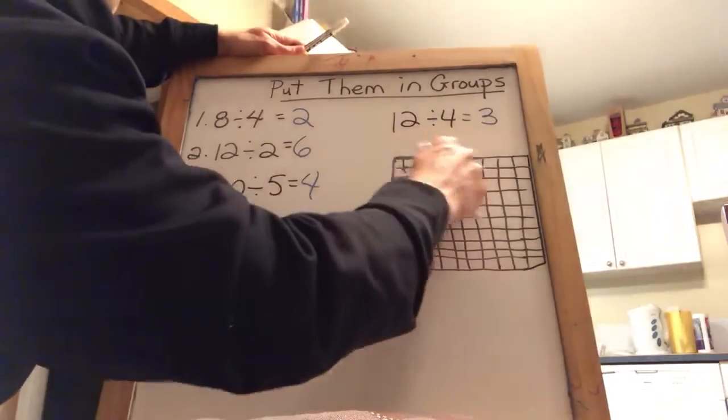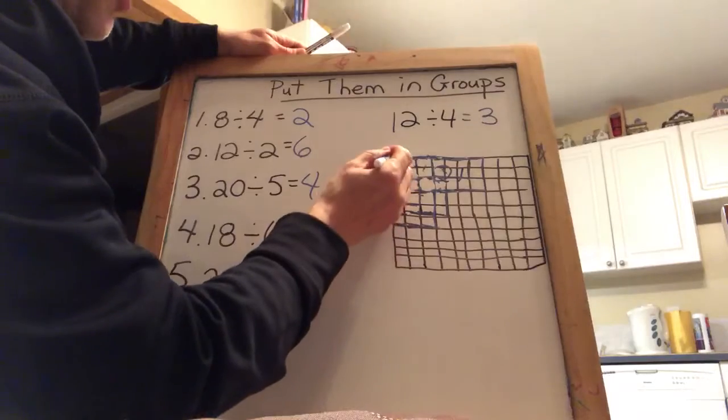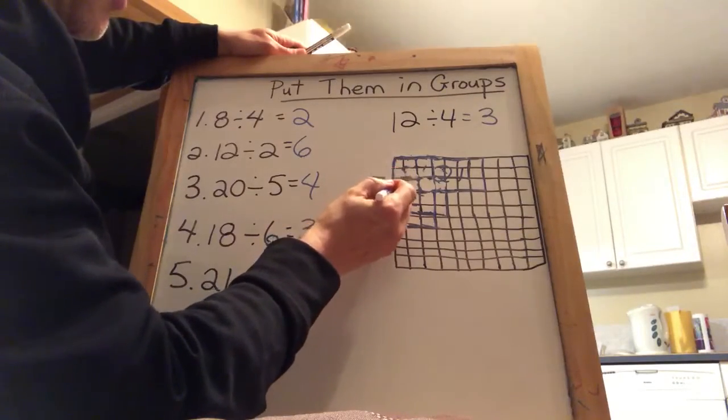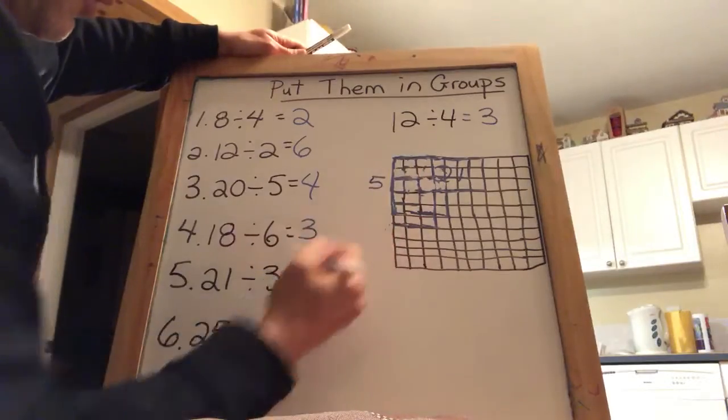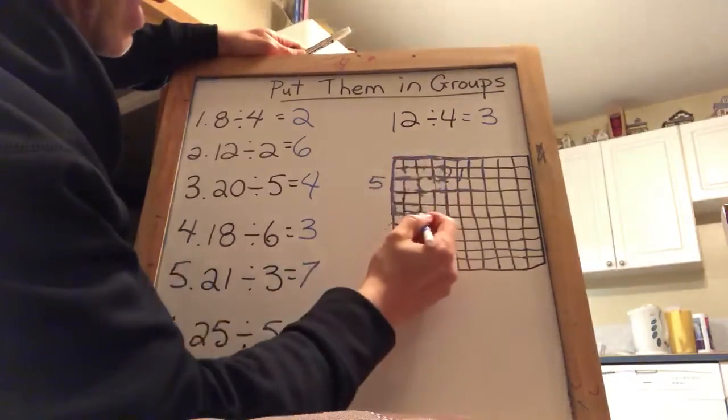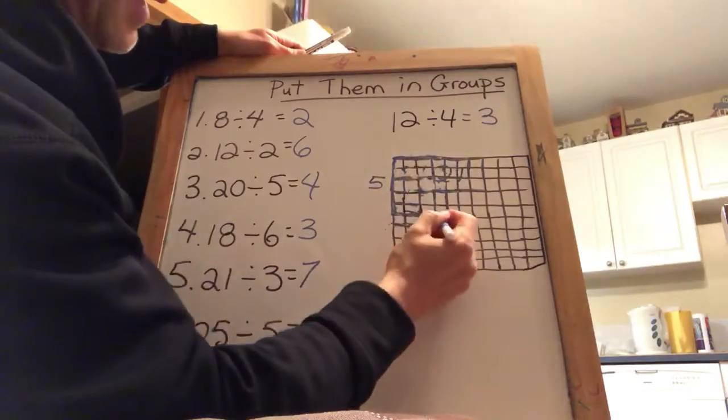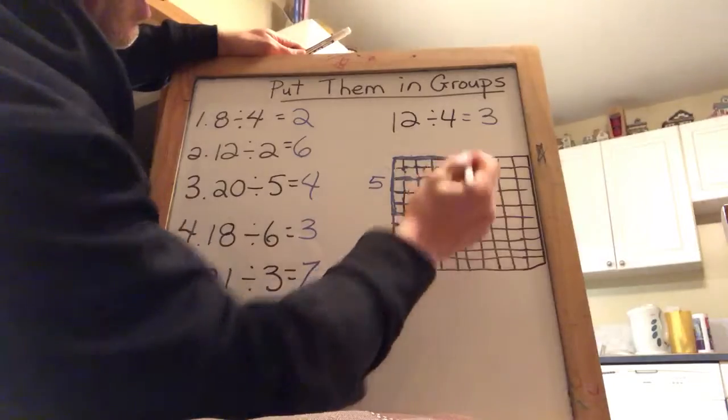So 25 divided by 5. So let's get 5 rows. That's 1, 2, 3, 4, 5. And how far are we going to have to go across to get 25? So 5. Another 5 is 10. Another 5 is 15. Another 5 is 20. Another 5 is 25.